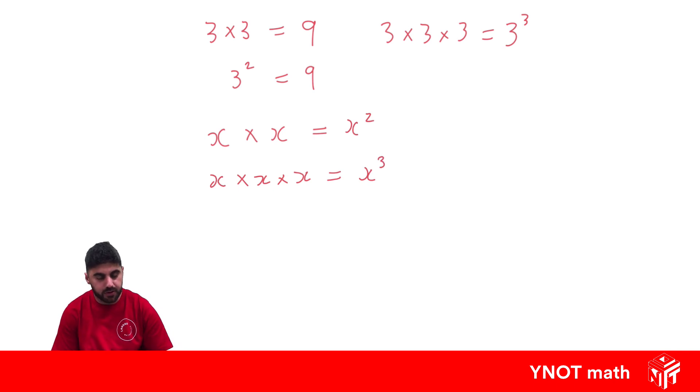That's nice and easy when the pronumerals are the same, but what happens when they're different? x times y, well that's just xy. Because remember in algebra when we have multiplication, we can just write the terms next to each other.